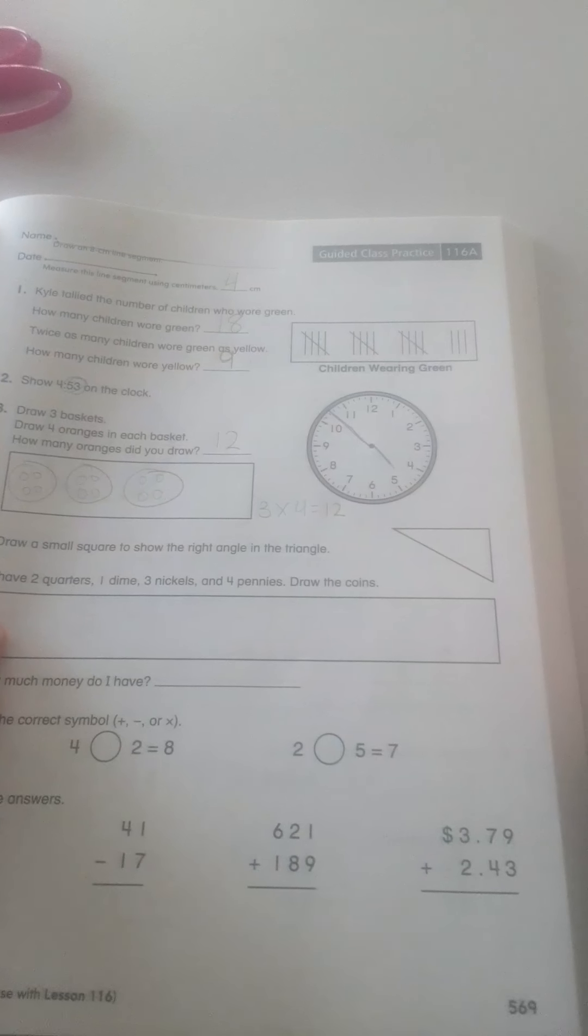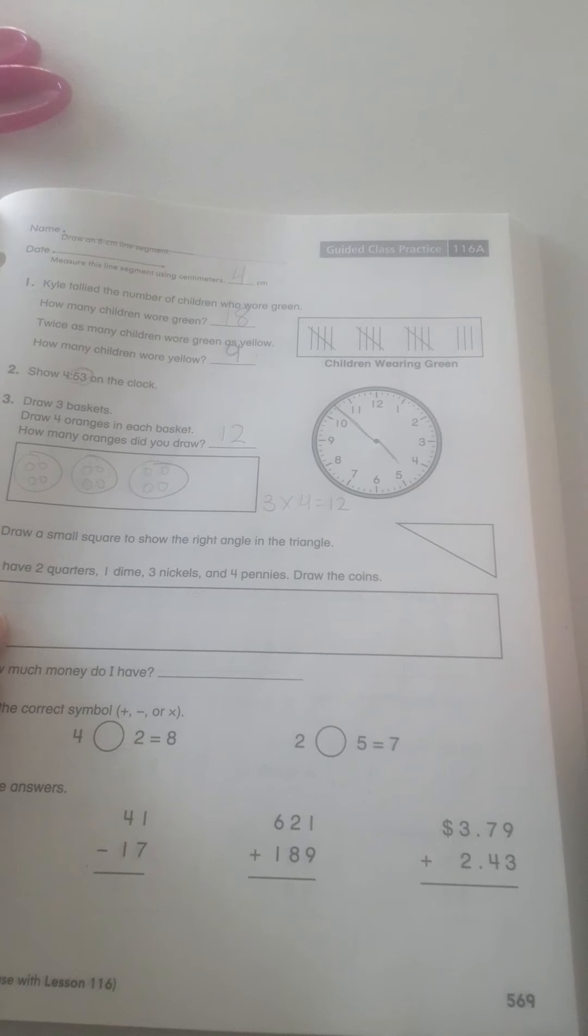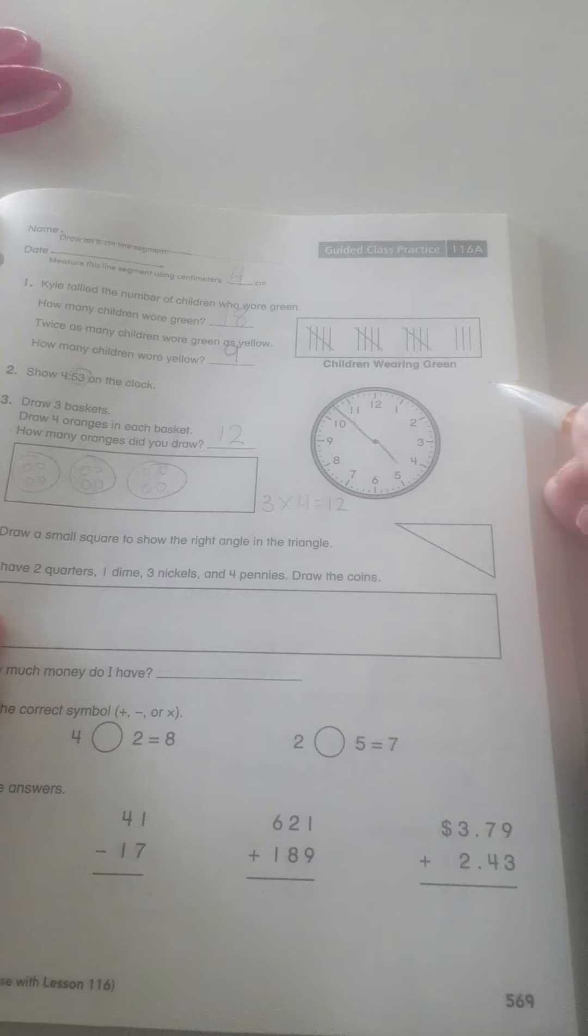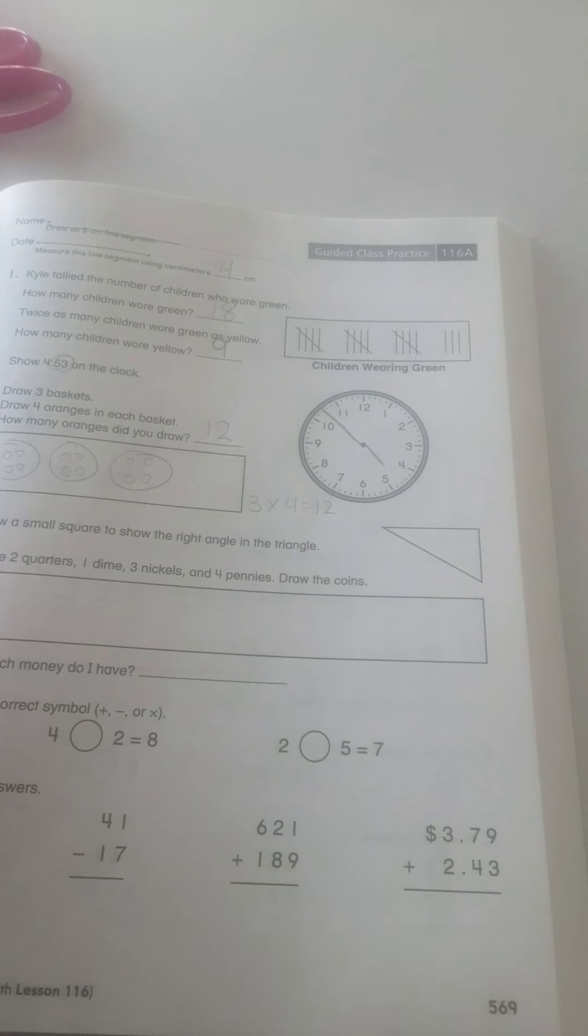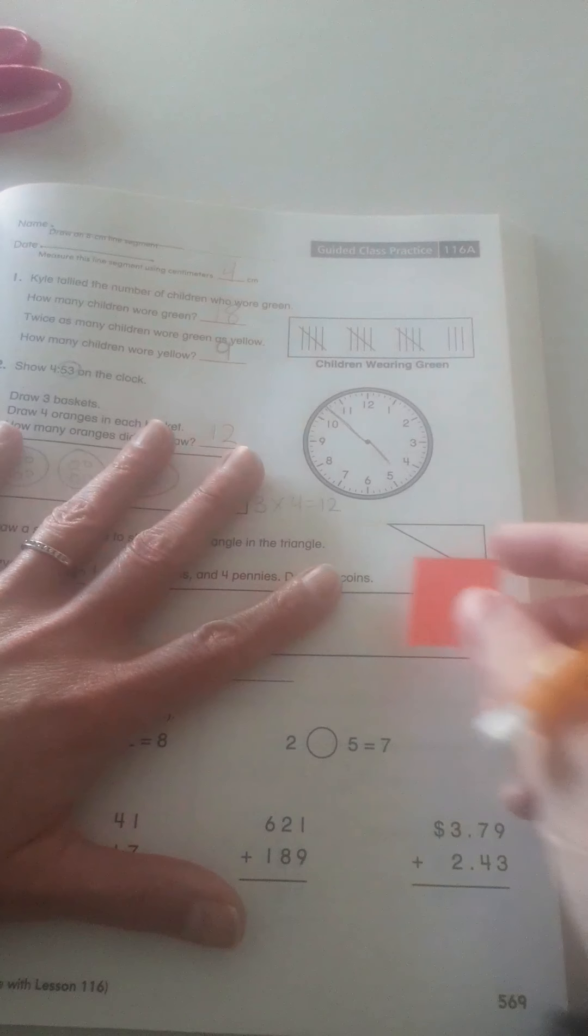Number 4 says, draw a small square to show the right angle in the triangle. So, remember, when you think of a right angle, think of the letter L. And you can use a piece of paper to help you.